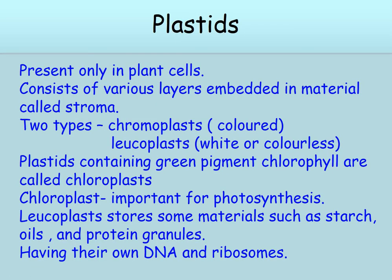Next is plastid. It is present only in plant cells. It consists of various layers embedded in a material called stroma. There are two types of plastids: chromoplast and leucoplast. Plastids containing the green pigment chlorophyll are called chloroplasts. Chloroplast is important for photosynthesis.